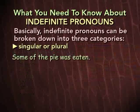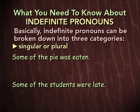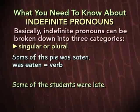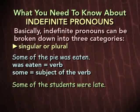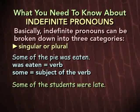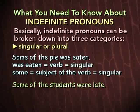Take a look at these two sentences: 'Some of the pie was eaten.' 'Some of the students were late.' In both sentences, an indefinite pronoun is the subject of the verb. In the first sentence, the verb is 'was eaten' and the subject is 'some' — some of the pie. The pronoun 'some' is referring to some of the pie, which is a single thing. Therefore, we consider the pronoun singular in this sentence, and that's why the singular verb 'was eaten' is correct.